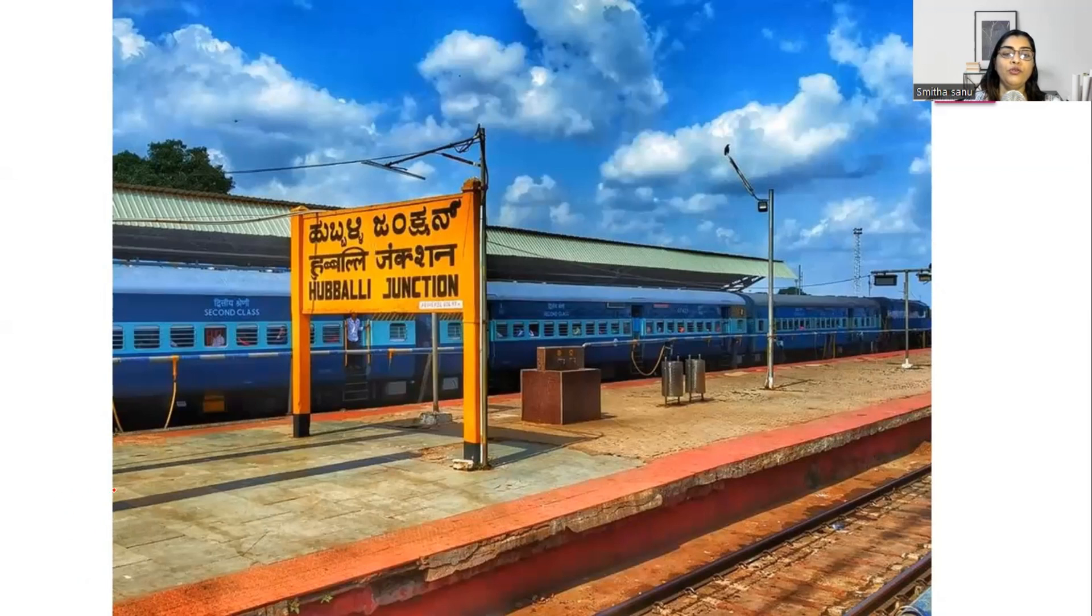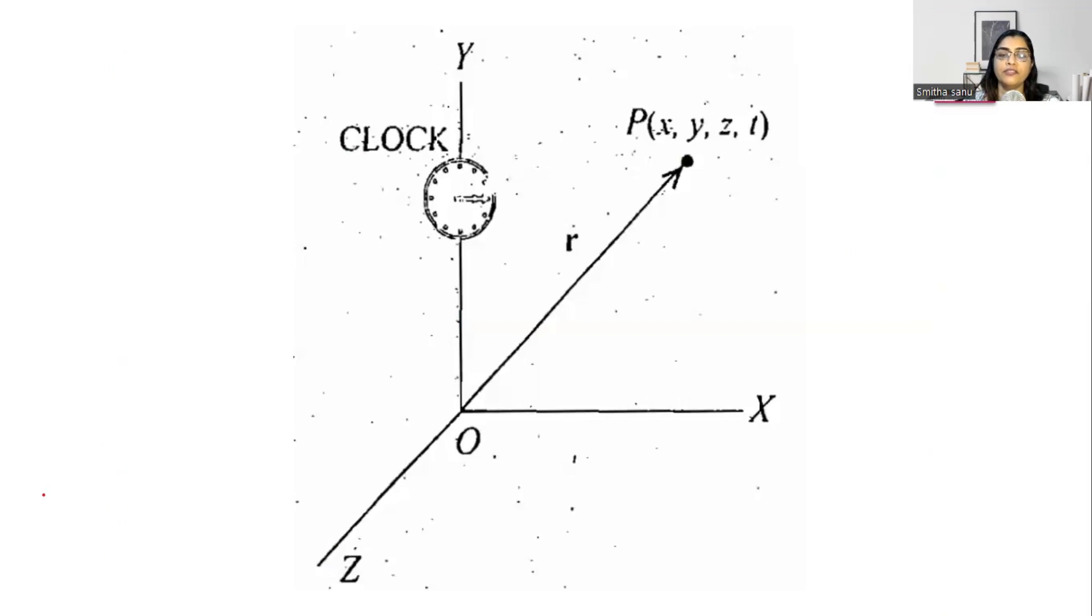So when you look at things outside your frame of reference, for example, if I look outside this train, I see the signboard, the name board of the station as the reference frame or the point of reference. So in a reference frame, I look at a point of reference, for example, let that be a point P.